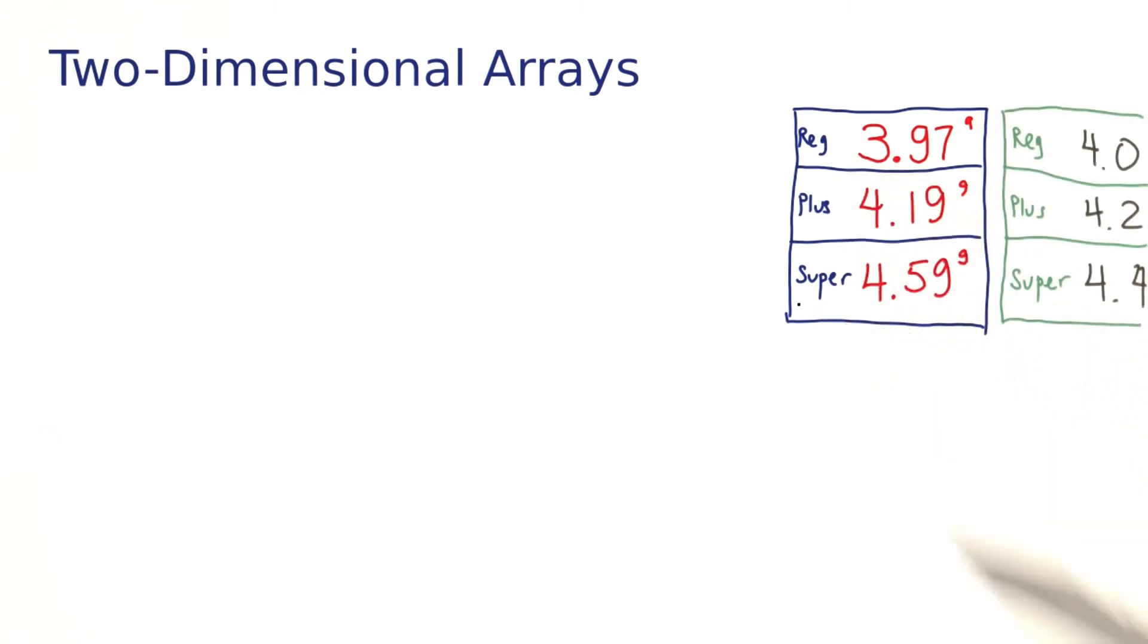Well, what if you have two gas stations? In this case, you will want to store a two-dimensional arrangement with rows and columns. Two-dimensional arrays can do that.